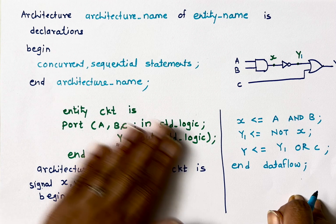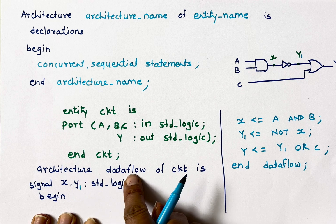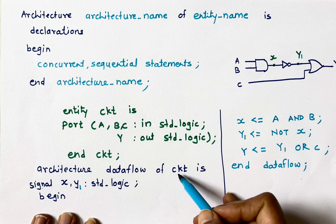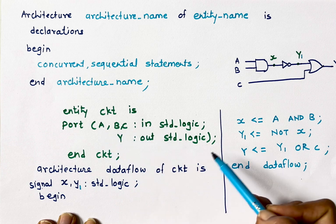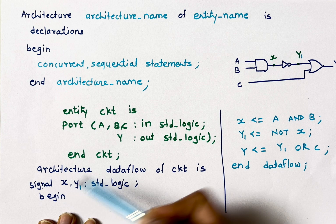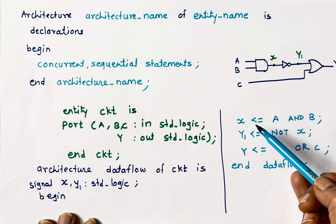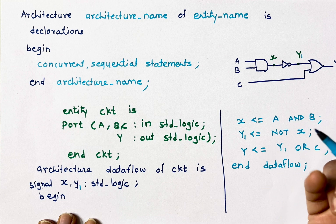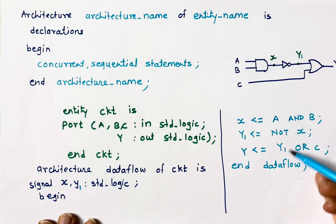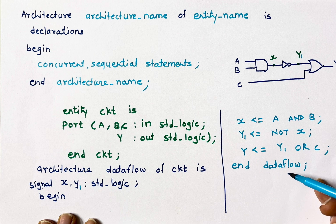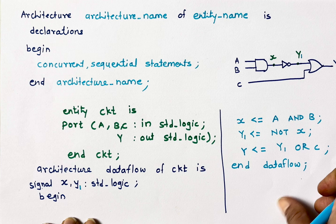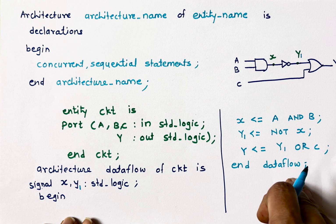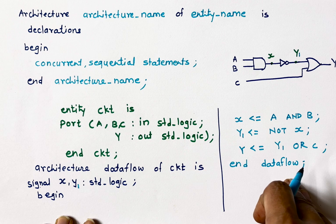In architecture, the architecture name is generally the modeling style name, but it's not mandatory. You write the entity name so you understand inputs are A, B, C and output is Y. Then you declare intermediate wires, then 'begin', and use concurrent or sequential statements based on the modeling style — in behavioral modeling you use process statements with if-else or case. Then 'end architecture_name'. Libraries and packages must be included at the top; a separate video is available. Thank you for watching — share the video and don't forget to subscribe!